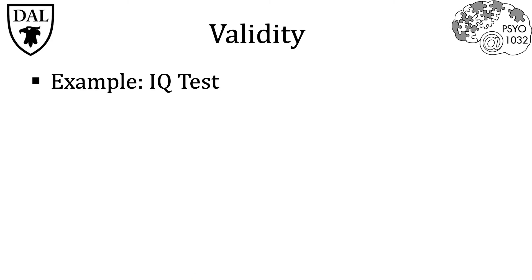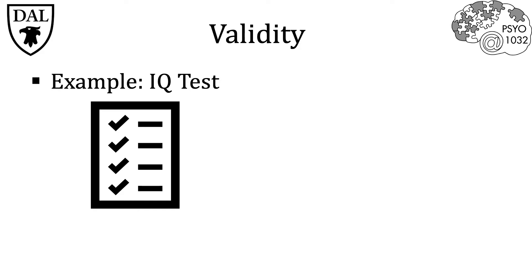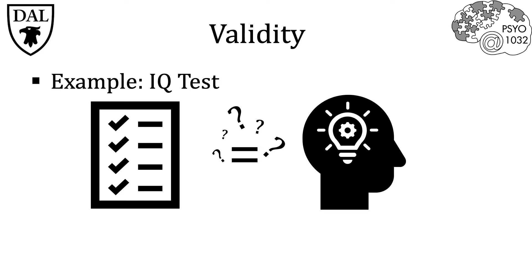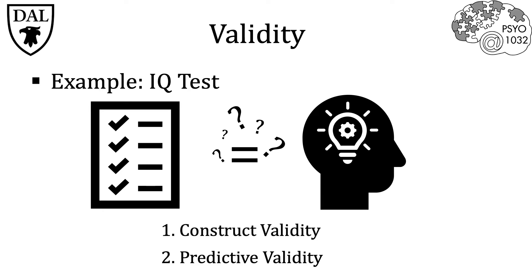Bringing this into the context of IQ tests, when measuring the validity of an IQ test, we would ask: does a person's IQ score accurately represent their intelligence? This question is obviously very important and can be broken down further into two specific subsets, those being construct validity and predictive validity.